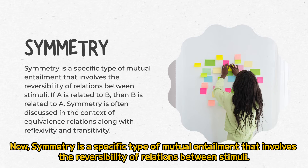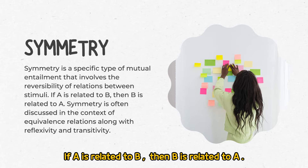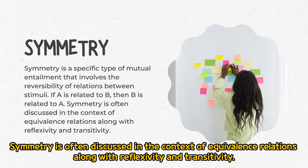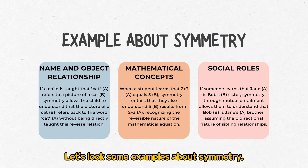Now, symmetry is a specific type of mutual entailment that involves the reversibility of relations between stimuli. If A is related to B, then B is related to A. Symmetry is often discussed in the context of equivalence relations, along with reflexivity and transitivity. Let's look at some examples about symmetry.